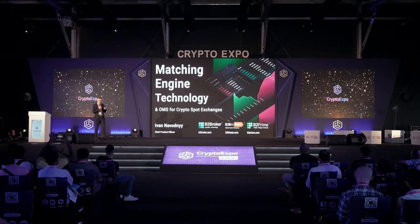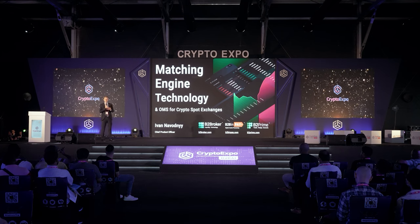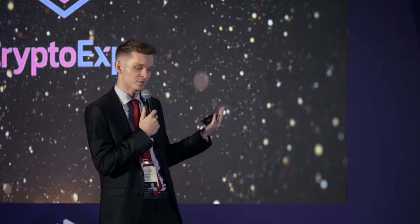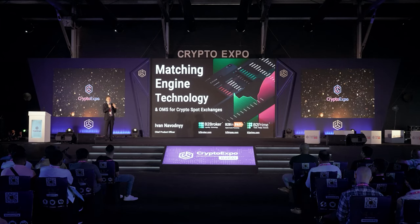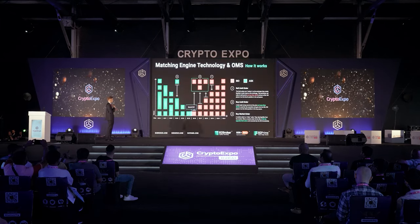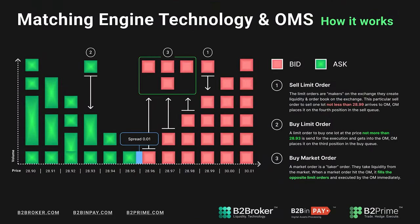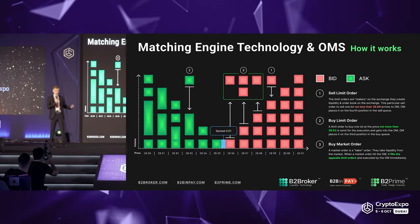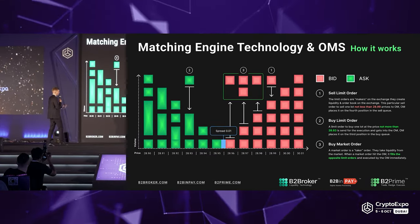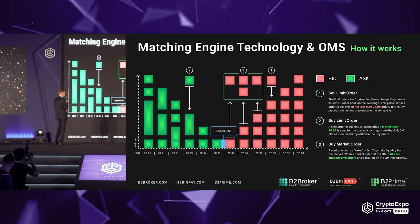A small brief on what an order management system is: it's basically a technology that allows a buyer to match with a seller. However, it sounds really simple, and I'm going to explain why it's actually very complicated technology. There are basically two different types of orders — a market order and a limit order. Of course there are stop orders, trailing stop, fill or kill, immediate or cancel, but it all comes down to those two.